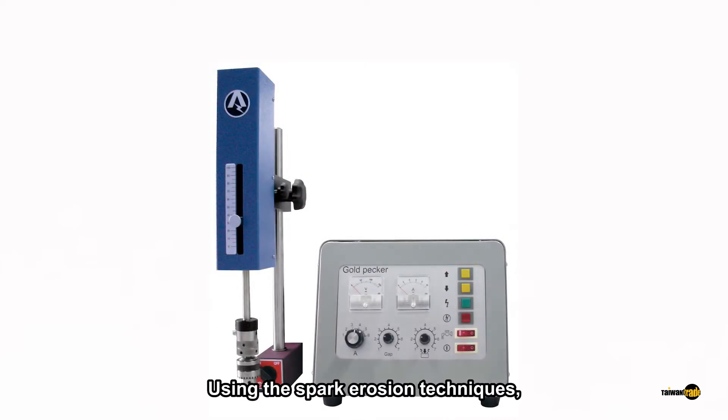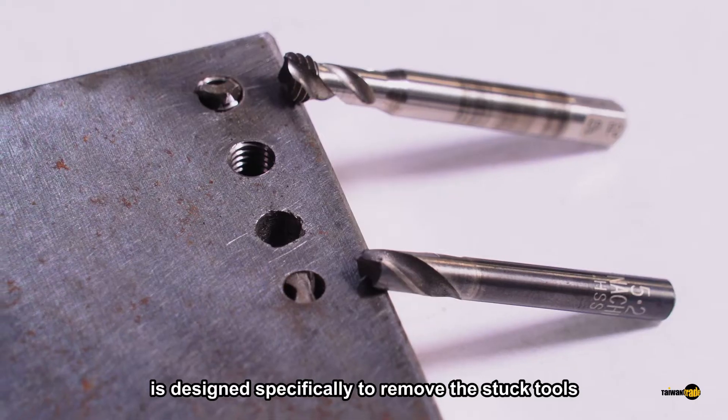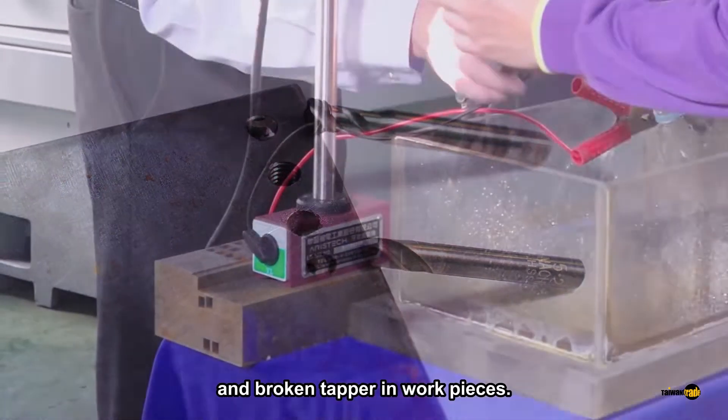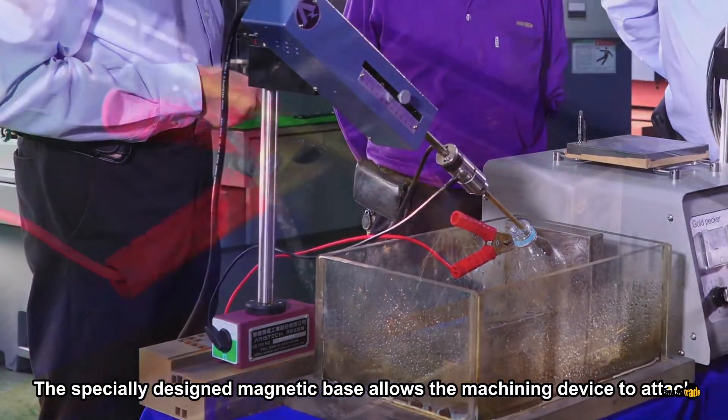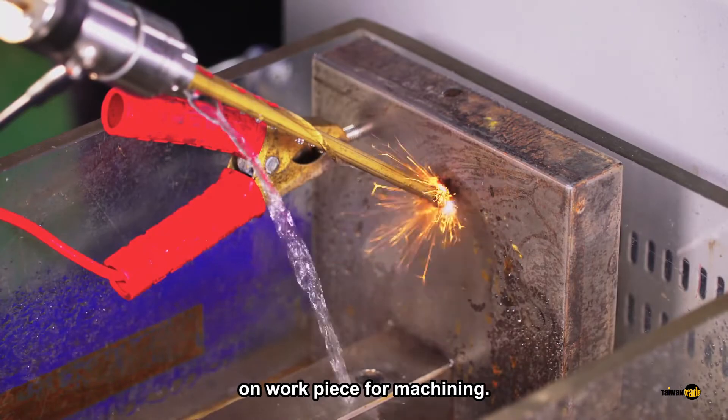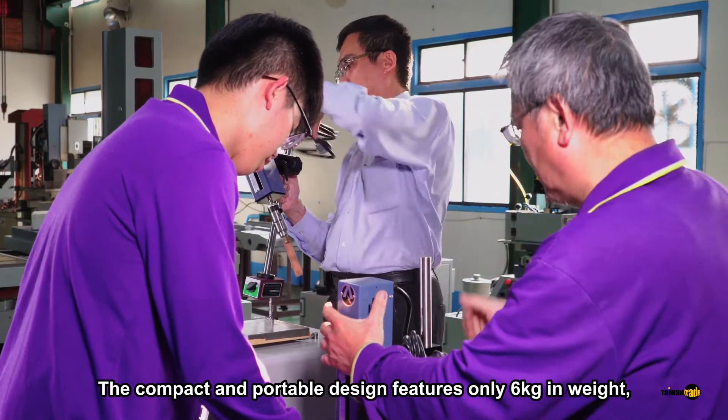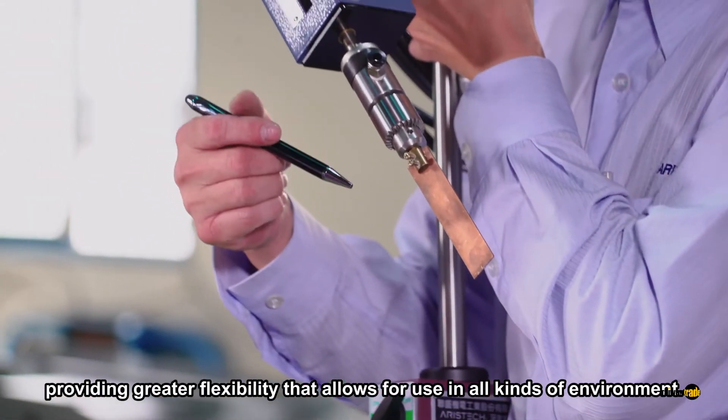Using the spark erosion techniques, the LS100 broken tap remover is designed specifically to remove stuck tools and broken tapper in work pieces. The specially designed magnetic base allows the machining device to attach on work piece for machining. The compact and portable design features only 6 kilograms in weight, providing greater flexibility that allows for use in all kinds of environment.